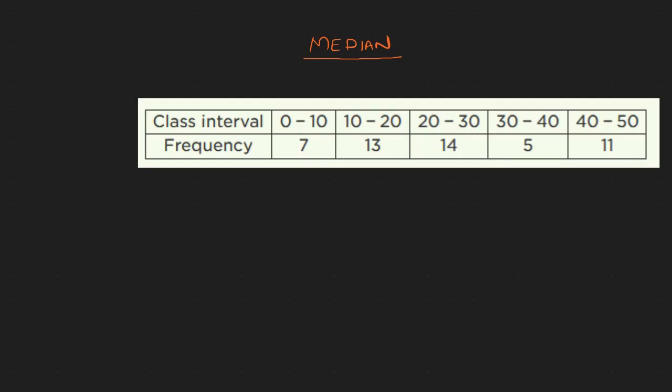Welcome back. Now we are going to be in lecture number 5 of statistics. We are going to look at how to calculate the median. We will be working in the median class and the modal class, and there is another column called cumulative frequency.